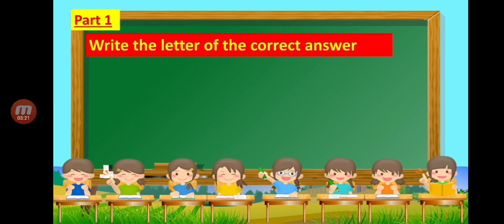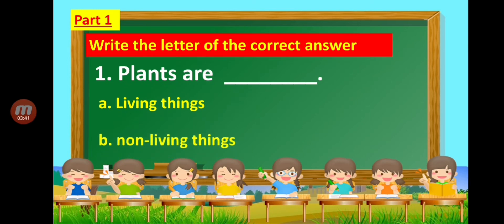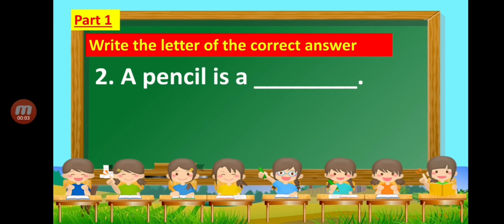Number 1: Plants are blank. A — living things, B — non-living things, C — books. Number 2: A pencil is a blank. A — food, B — non-living things, C — books.